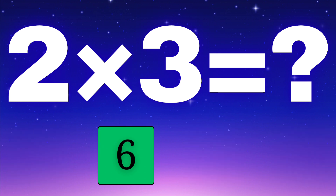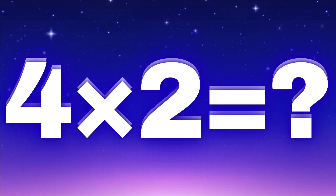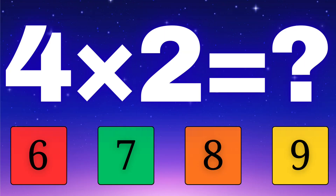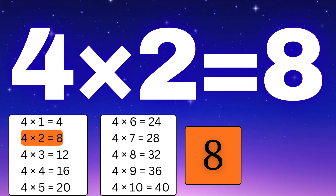The correct answer is six. Great start — two times three equals six. Next one: what is four times two? Let's check the options — is it six, seven, eight, or maybe nine? Think carefully. The answer is eight. You are doing amazing — four times two equals eight.